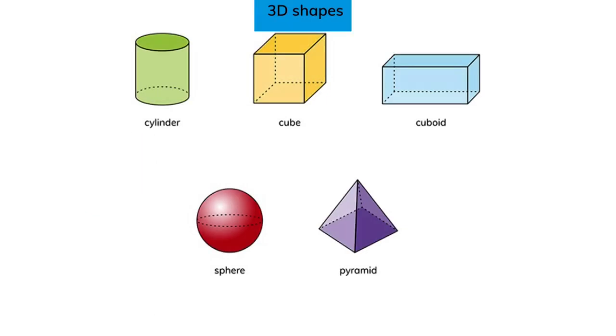A cylinder has a circle on the top and bottom. A cube has squares on every side. The faces of a cuboid are rectangles. There are triangles on a pyramid.